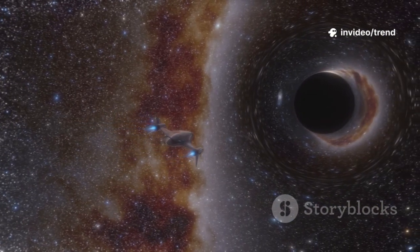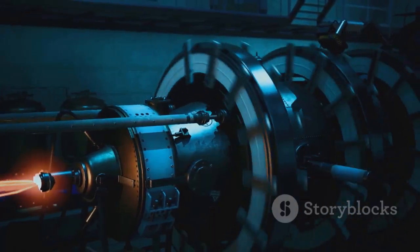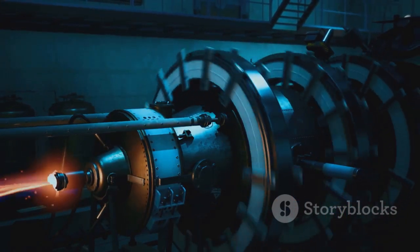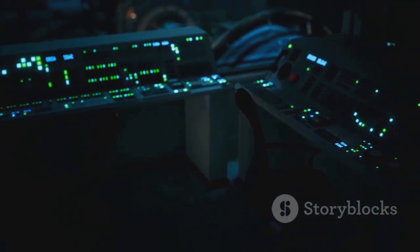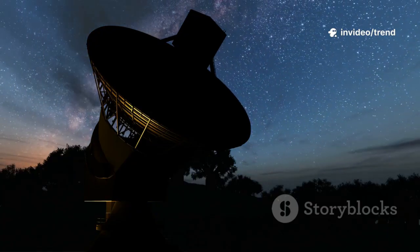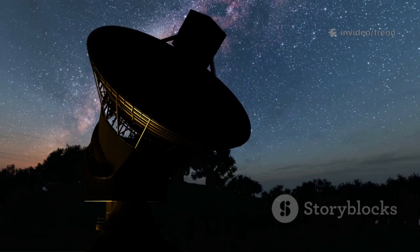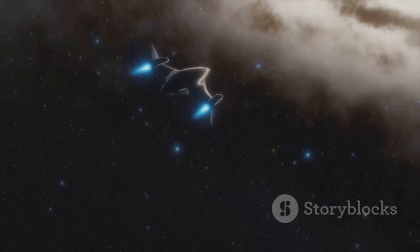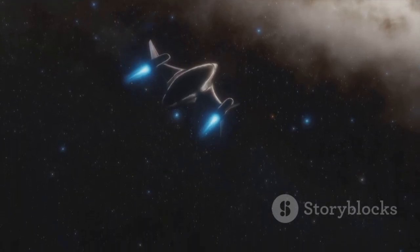Voyager's power comes from a nuclear battery, but its energy dwindles each year. NASA engineers have shut down instruments one by one to conserve power. Many systems have gone dark, yet its main transmitter, the spacecraft's voice, remains a faint beacon in the endless night.